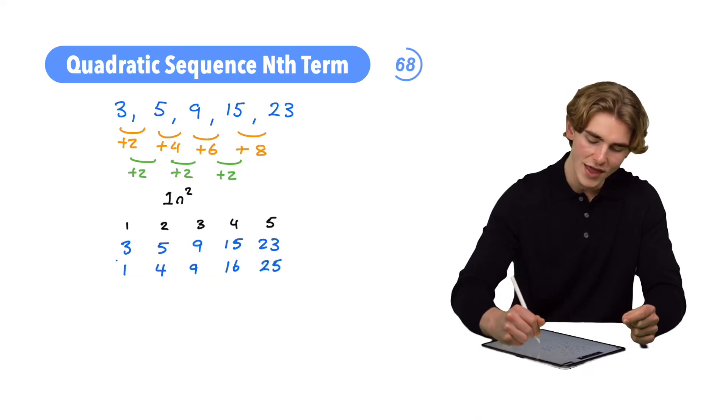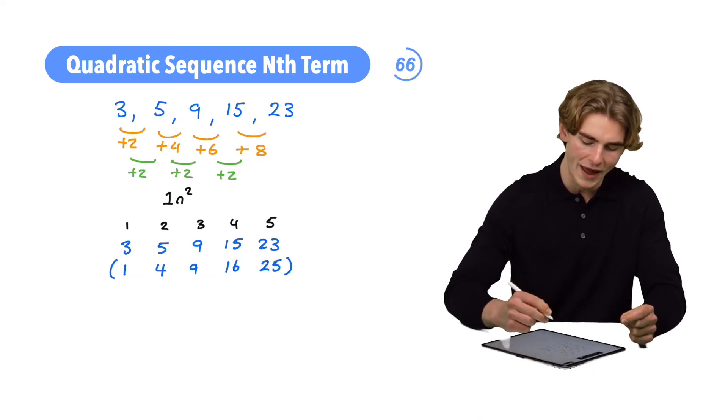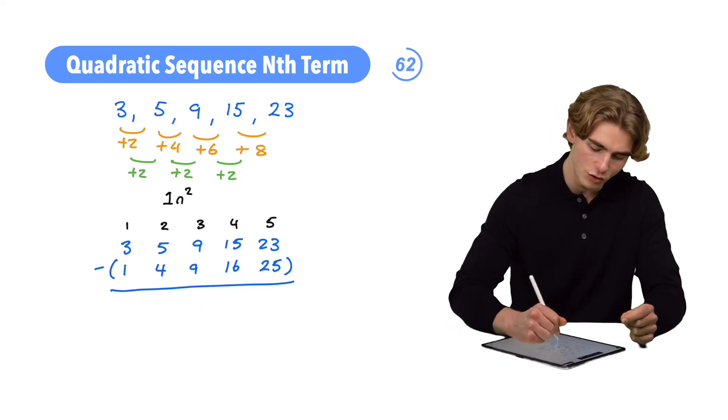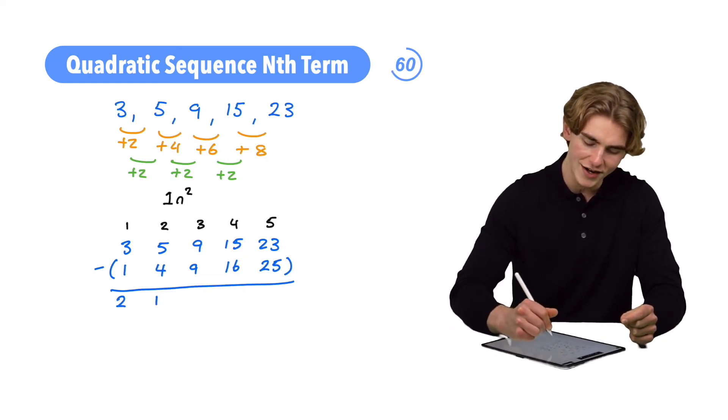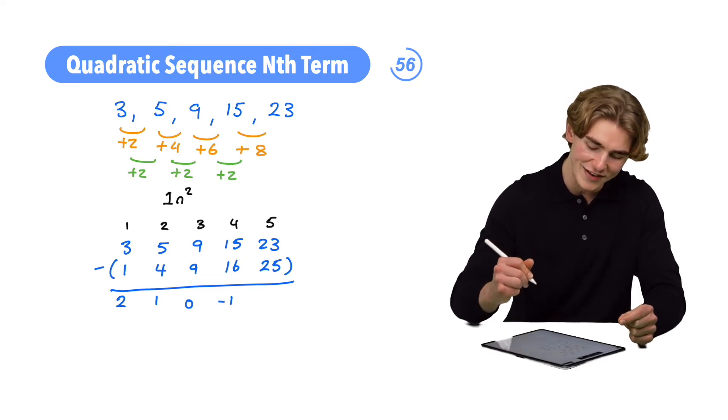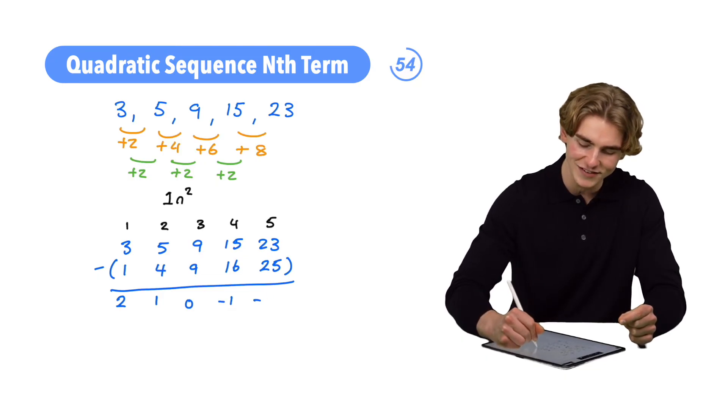Now guys, what we're going to do is we're going to subtract this from our original sequence. What is that going to give us? 3 take 1, that's going to be 2. 5 take 4, that's going to be 1. 9 take 9 is going to be 0. 15 take 16, that's going to be minus 1. And 23 take 25, that guys, is going to be minus 2.